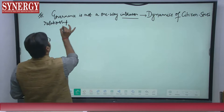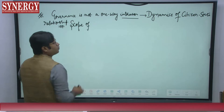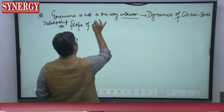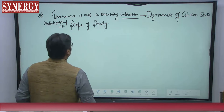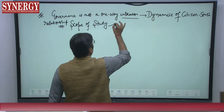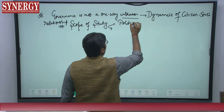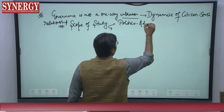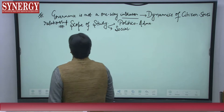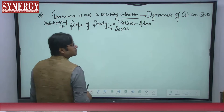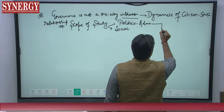The scope of study in governance is mostly divided into two parts: political-administrative, and social — and this is where social justice comes into the picture. The political-administrative aspect covers the functioning of government institutions, and the social aspect brings in the broader societal dimensions. This is the framework within which governance as a subject for UPSC mains should be understood.